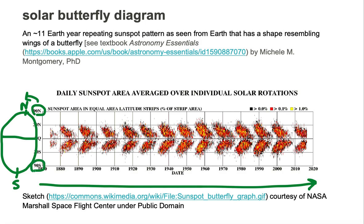Every day that passes by, dots are placed on the diagram to where the sunspots may occur. Over time, the sunspots start to resemble a butterfly shape.